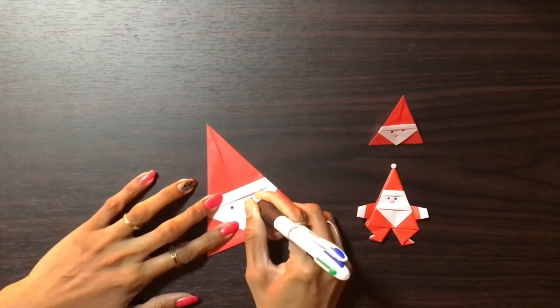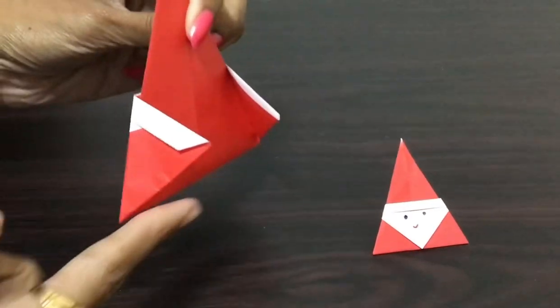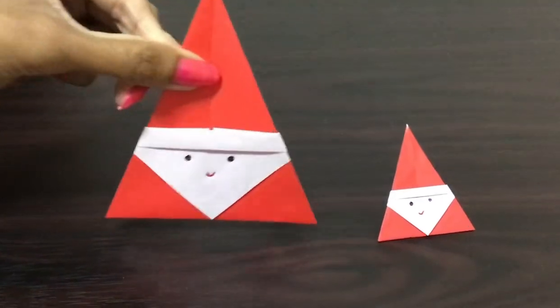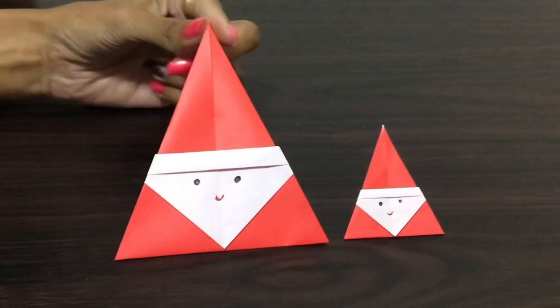Draw the eyes and mouth. You can make this Santa stand on the table with the help of this. This is made by using one fourth size of the sheet. Thank you for watching.